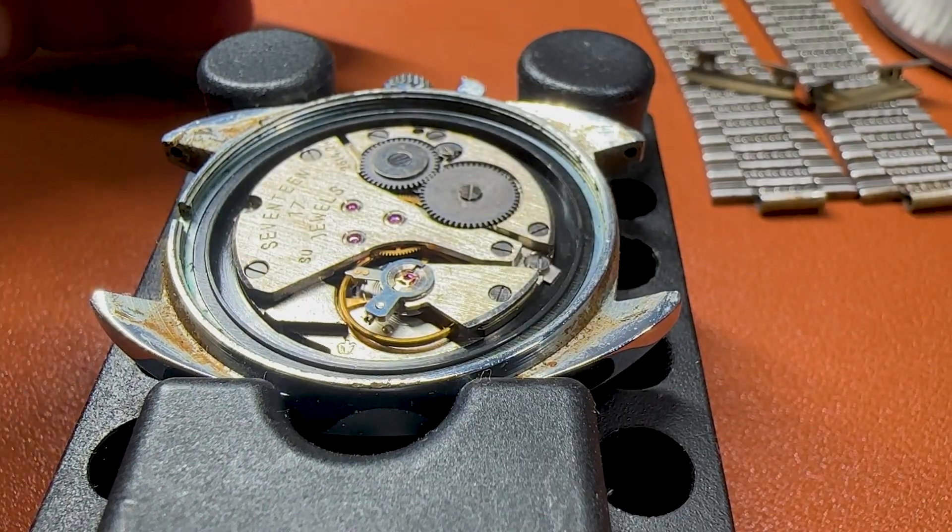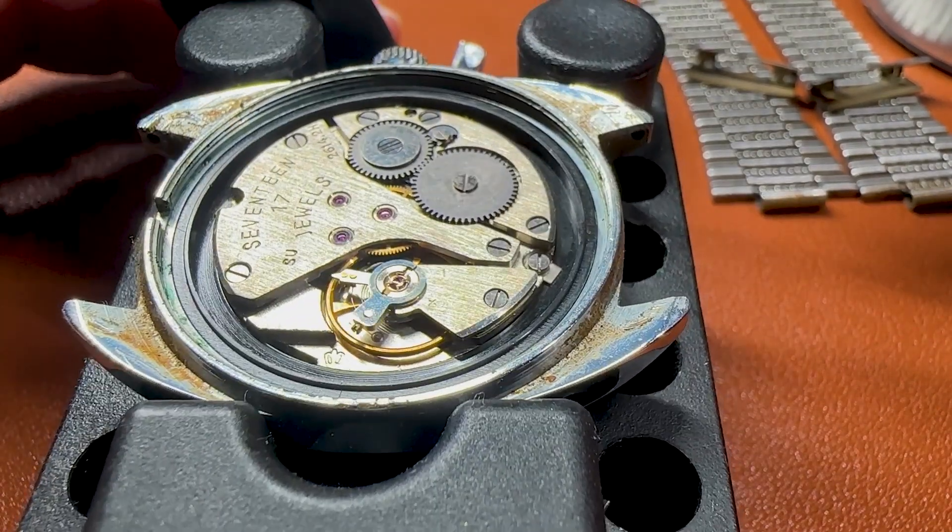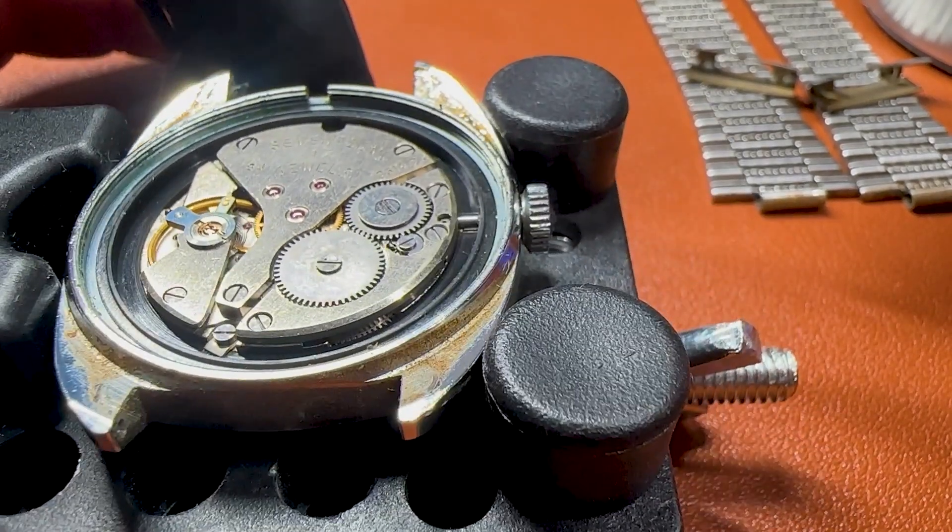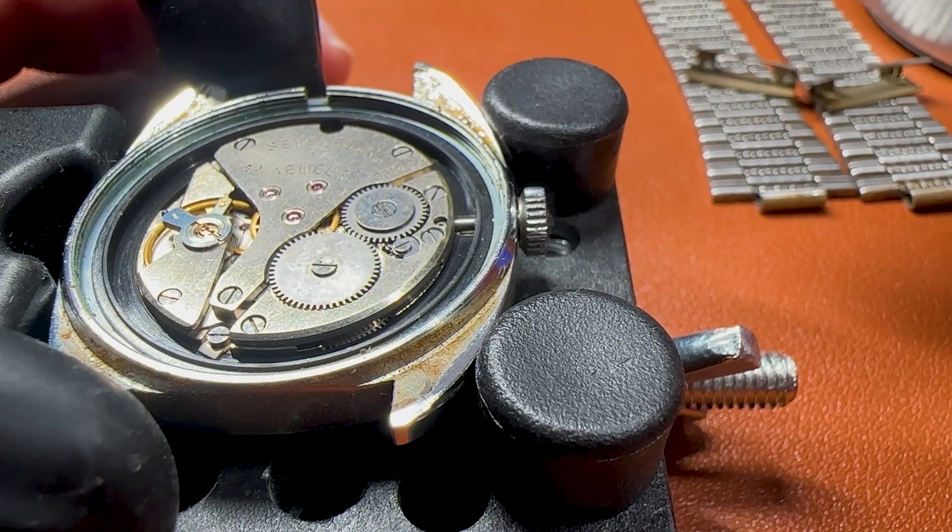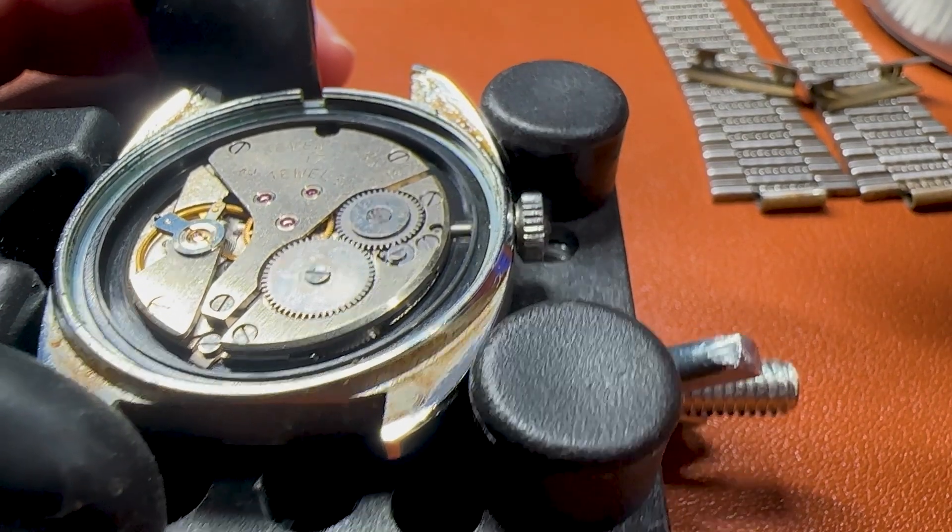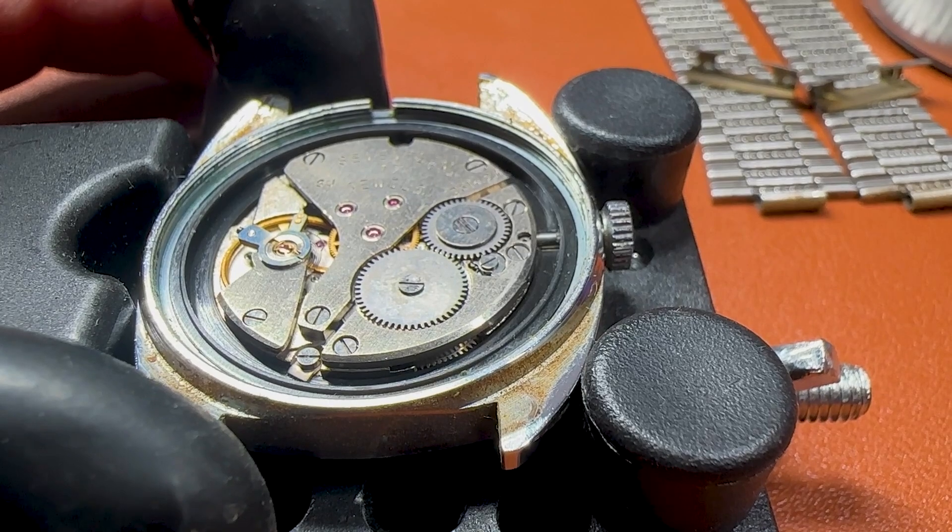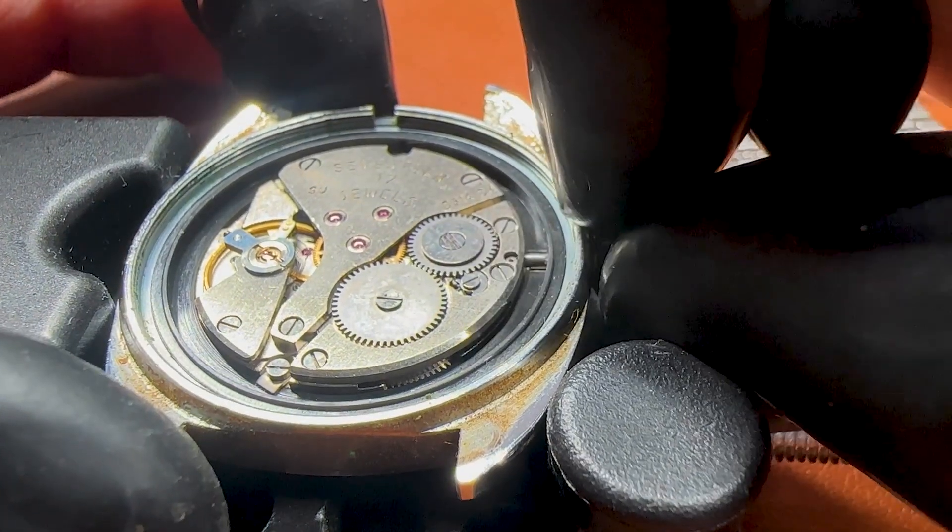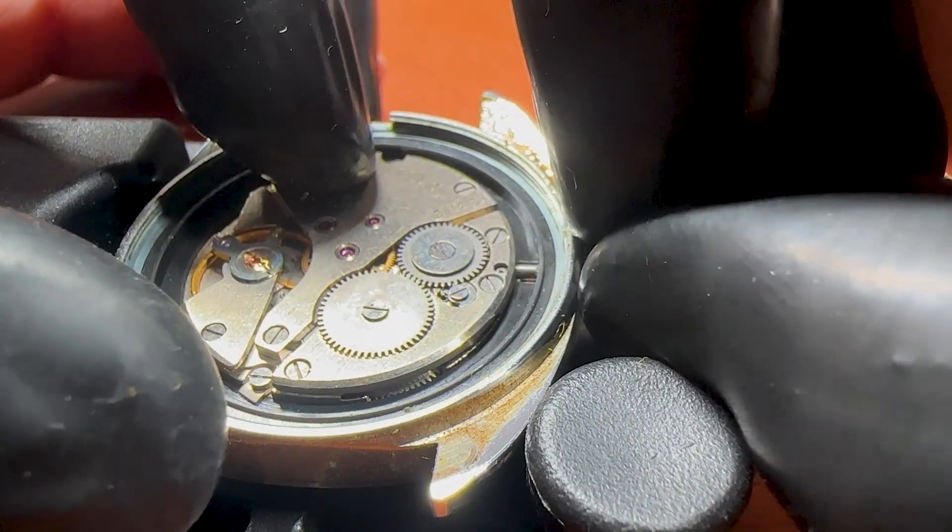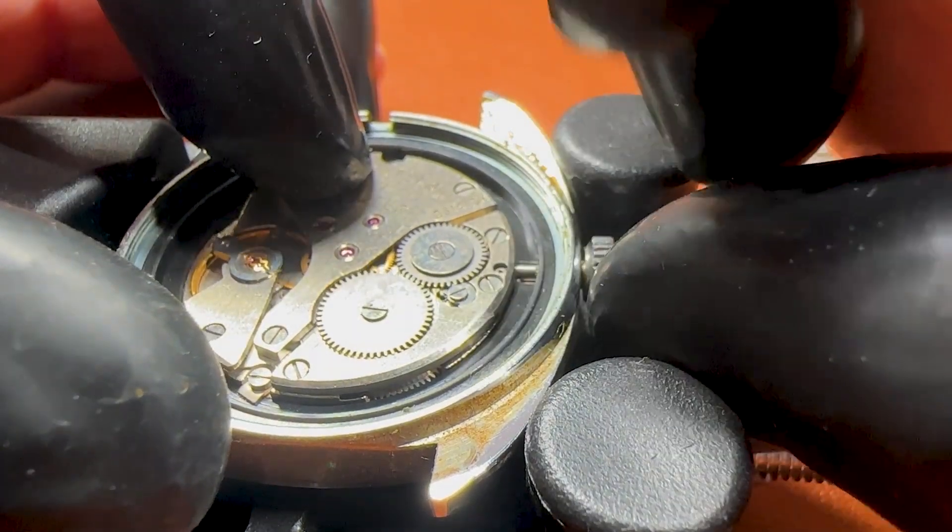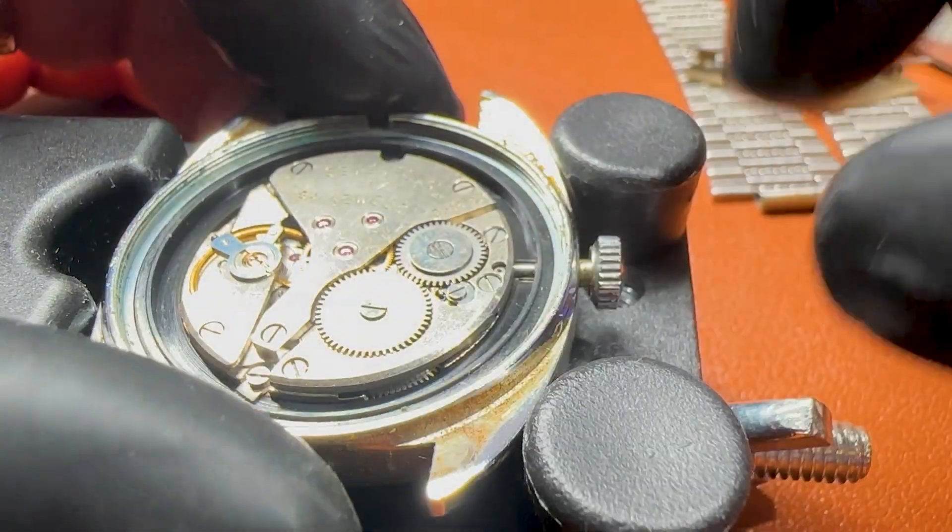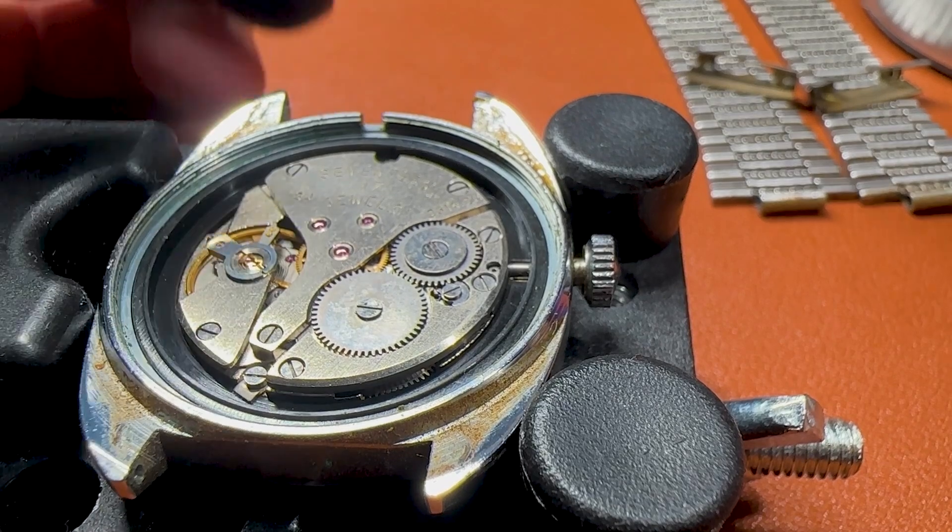So this is the movement of the watch, 17 jewels Seconda. It's a British company, but many of their watches were sold in the former Soviet Union and you could see this movement on other Soviet watches like Poljot or Slava. Let's remove the stem.